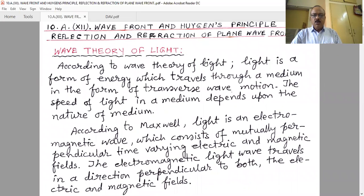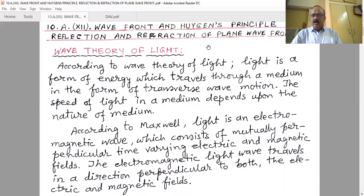Today we start the wave theory of light. Previously we learnt about ray optics. In ray optics, without considering the nature of light — only considering that light travels in a straight line path — we derived all things geometrically. Therefore ray optics is also known as geometrical optics.